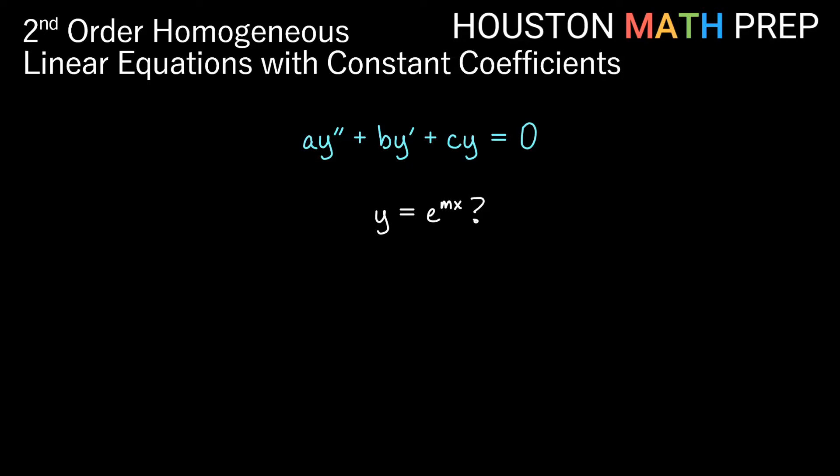That's a possibility. If y was e to some multiple of x, then when I take the derivative, the chain rule just says that that constant multiple is going to multiply on the outside. So when I take the derivative and then the second derivative, I would just be getting constant multiples of this original e to the mx. So let's just say what if y equals e to the mx was a solution for this? So y equals e to the mx, that would give us something to put in here.